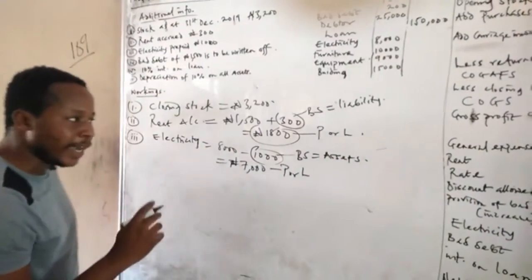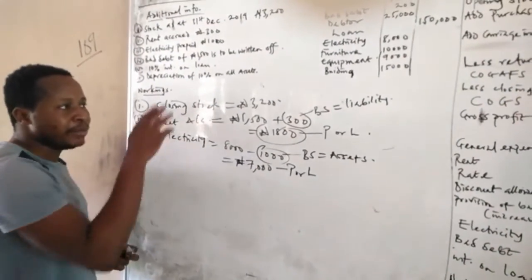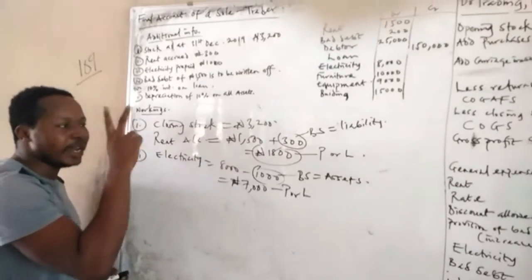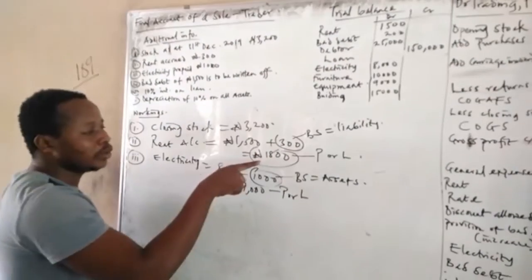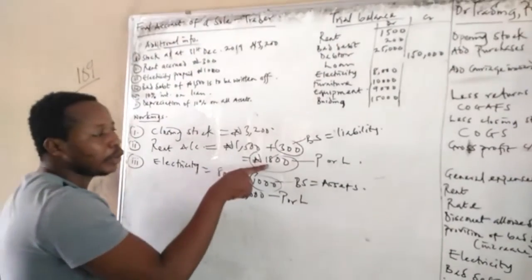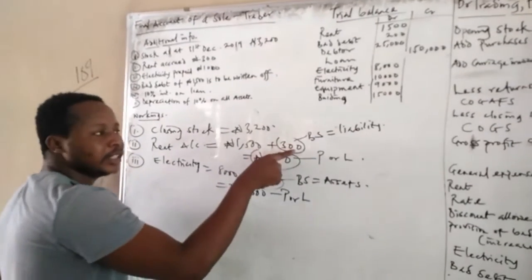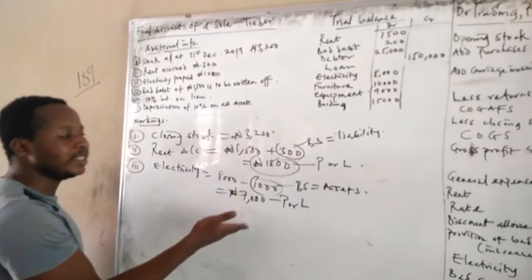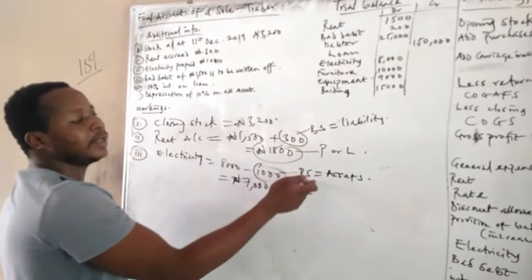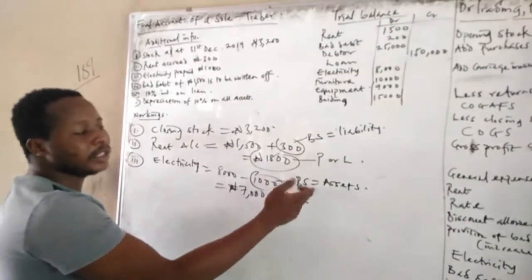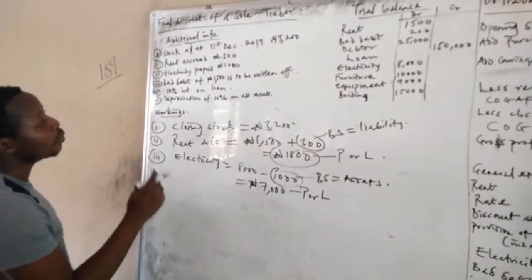The 1,000 prepaid electricity goes to your balance sheet under the current assets side. Don't forget: any information that appears in the additional information appears twice — the 300 rent affected the profit or loss account, and the 1,000 prepaid is going to the balance sheet.